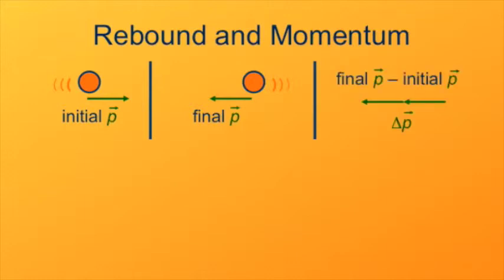The change in momentum is the final momentum minus the initial momentum. Minus the initial momentum is just the same thing in this case as the final momentum. So the change in momentum is twice the final momentum.